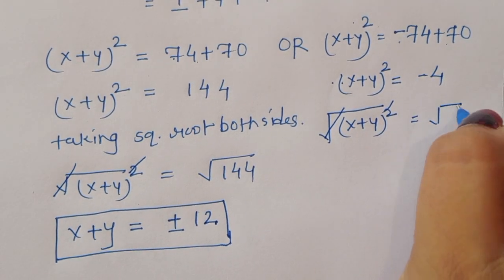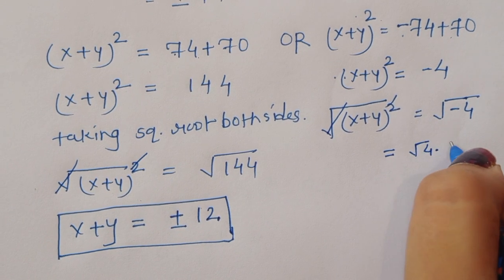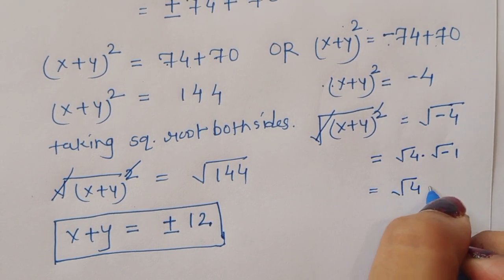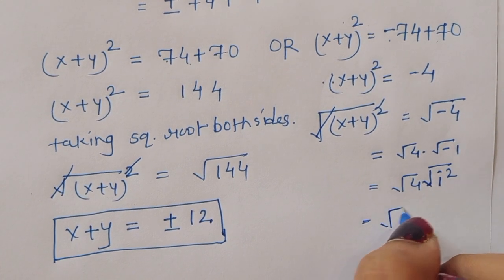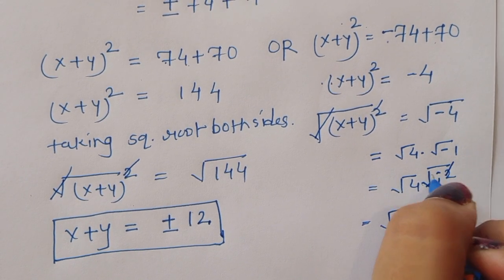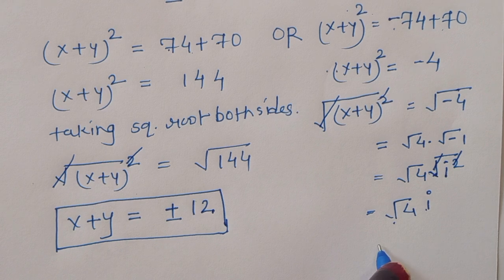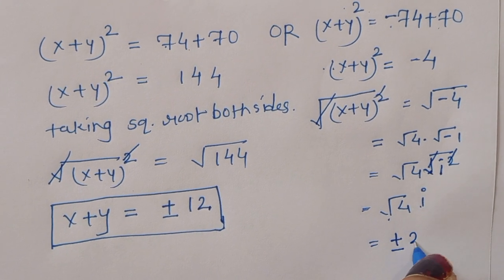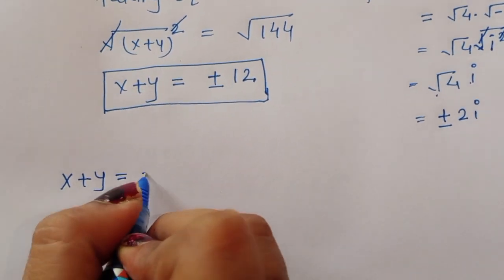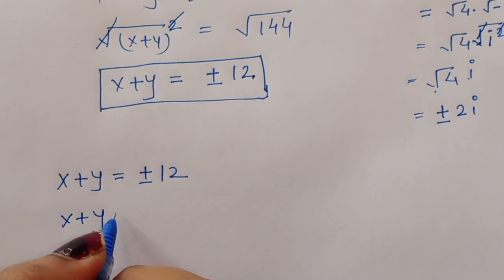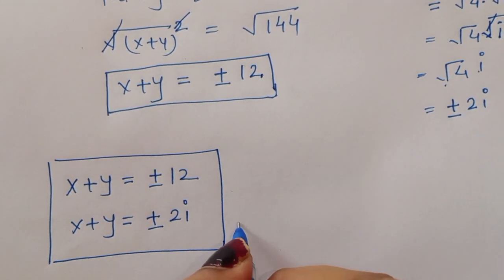Taking square root of minus 4: square root of minus 4 equals square root of 4 times square root of minus 1, which equals 2 times i. So x plus y equals plus or minus 2i. Therefore, we have two values: x plus y equals plus or minus 12, and x plus y equals plus or minus 2i. This is the solution.